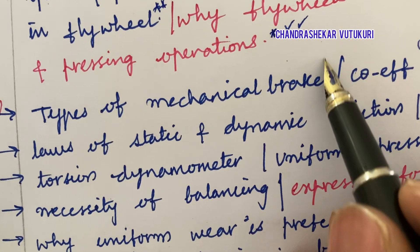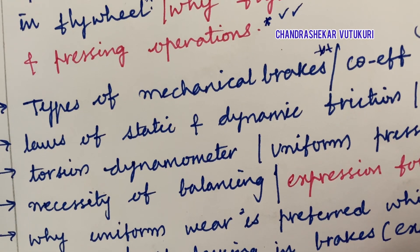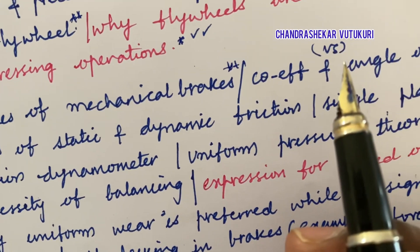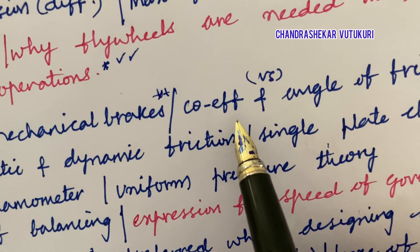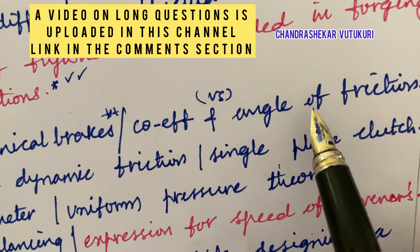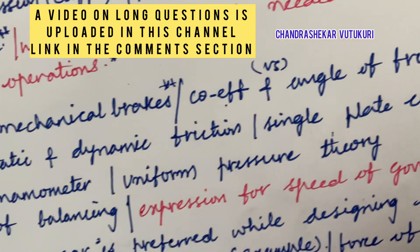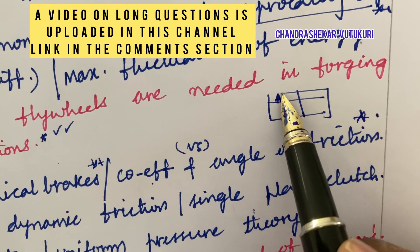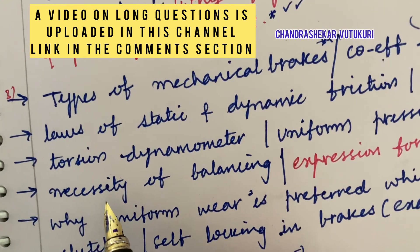Types of mechanical brakes — you are not supposed to skip any part as per the question paper pattern of Part A and Part B. You need to be thorough with the entire unit. They are going to ask in-depth questions from each and every corner of the syllabus. Coefficient of friction versus angle of friction and the differences — when a difference is asked, you are supposed to make a tabular column highlighting A and B, writing in point-wise format.